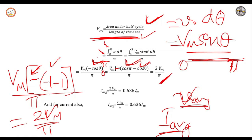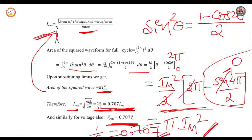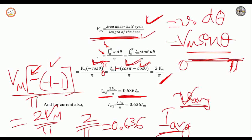Average value for a half cycle is 2Vm/π. Since 2/π = 0.636, the average voltage V_avg = 0.636 × Vm. Similarly, I_avg = 0.636 × Im. So RMS value = 0.707 × Vm, and average value = 0.636 × Vm. RMS value is greater than the average value.